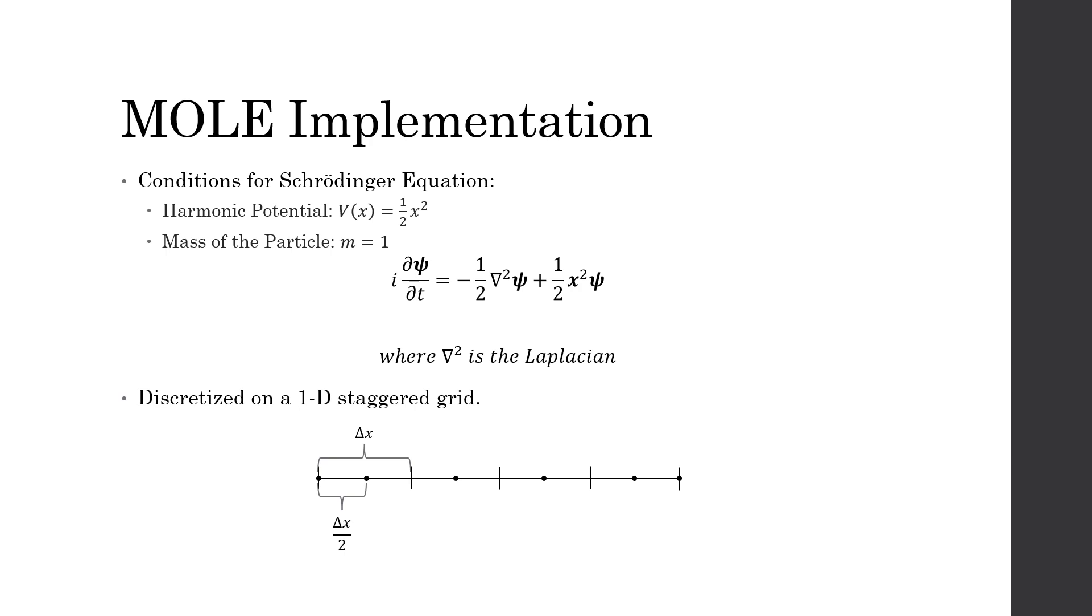When I discretize my Schrödinger equation on a one dimensional staggered grid and put it in vector format, I see that there is a mimetic Laplacian in my differential equation. This tells me that I want to call the Laplacian function in MOLE to create my Laplacian operator.